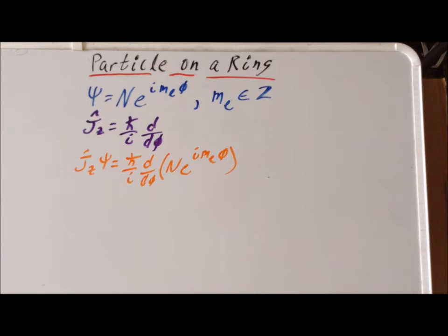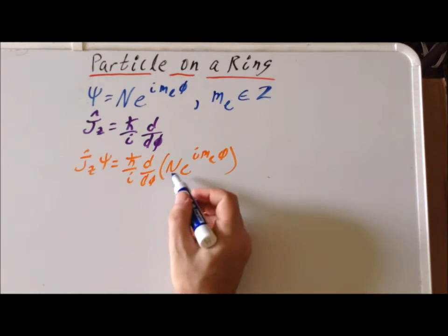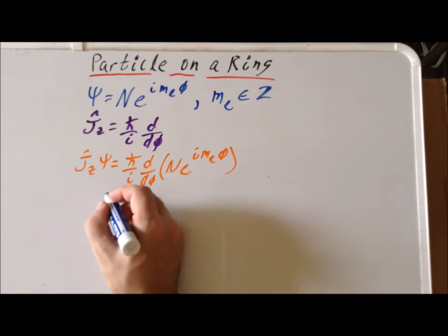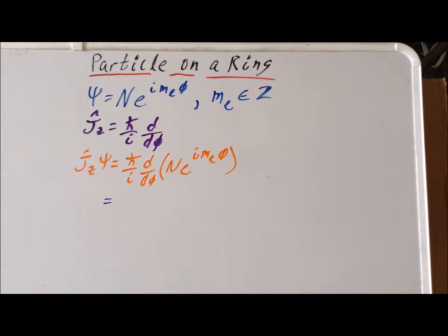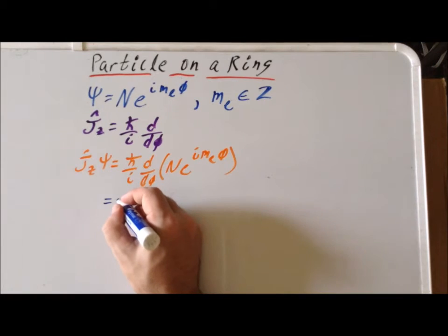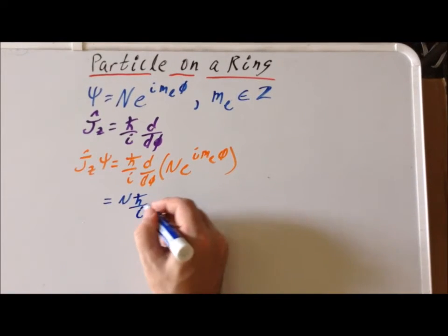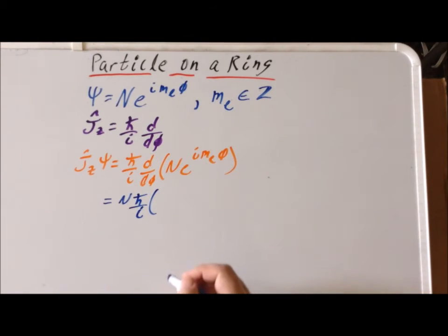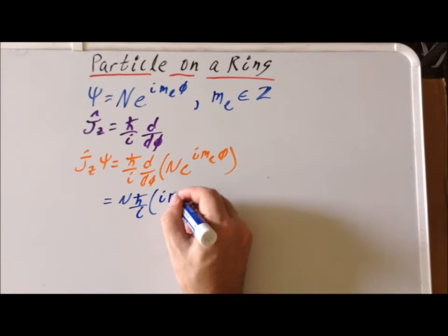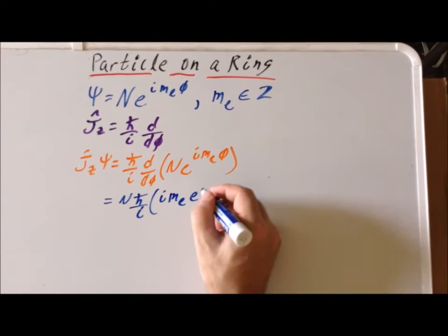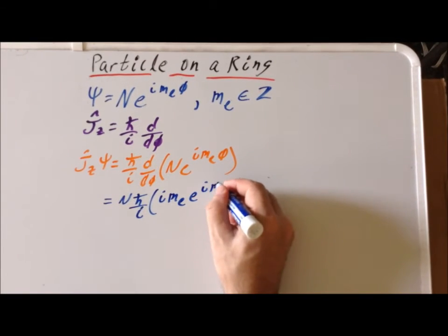We can pull constants through the differential operator. So we get n times h-bar over i. And then the actual derivative inside is going to be i times m sub l times e to the i m sub l phi.